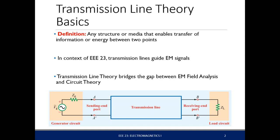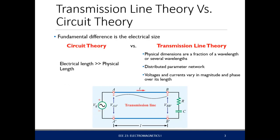Our transmission lines basically guide electromagnetic signals from a sending port to a receiving port. This transmission line theory actually bridges the gap between electromagnetic fields and circuit theory. In circuit theory, we assume the electrical length is much greater than the physical length, but in transmission lines this is not true. The physical dimensions are a fraction of a wavelength or several wavelengths long, giving us a distributed parameter network where voltage and current vary in magnitude and phase over the length.